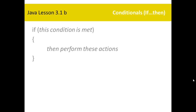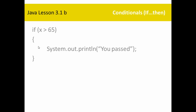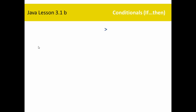These are called boolean expressions, and they can be made more sophisticated using conjunctions and disjunctions. What you've already done is written a program that said: if some condition is met, then perform these actions inside the braces.